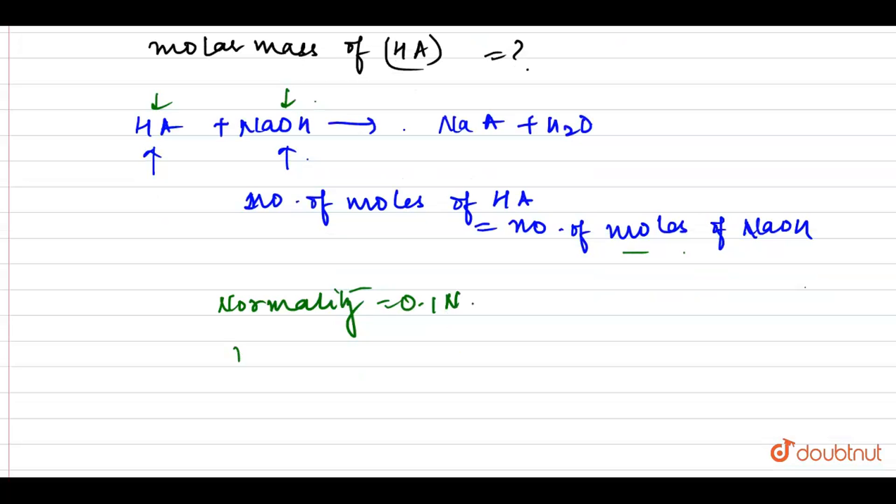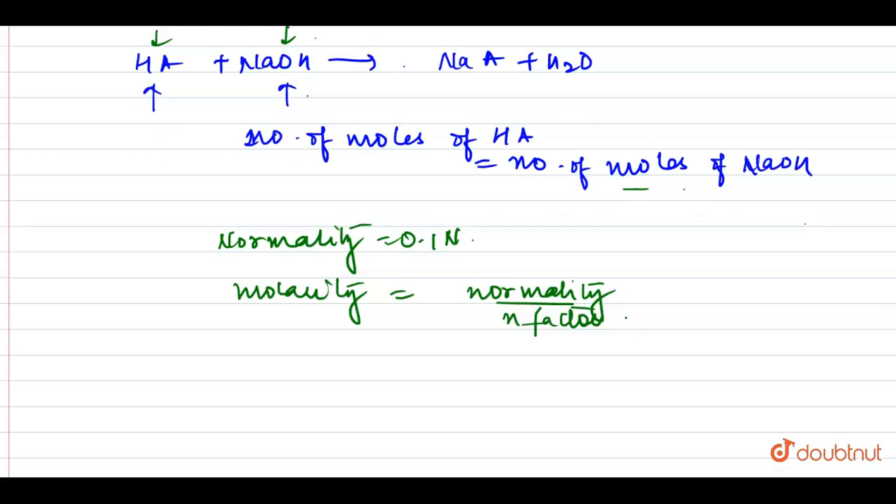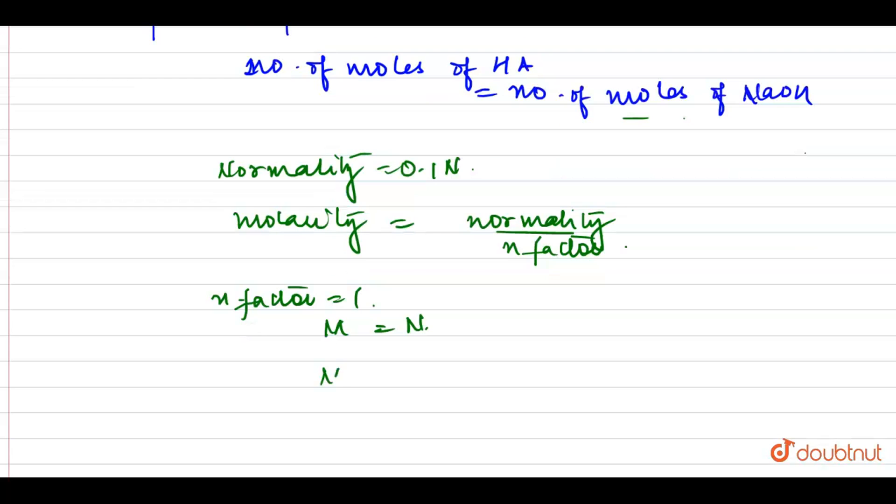I know that molarity is equal to normality upon n-factor. For monobasic acid and monoacidic base, both have n-factor equal to 1. This means in this case, molarity is equal to normality. So, molarity is equal to 0.1 molar.